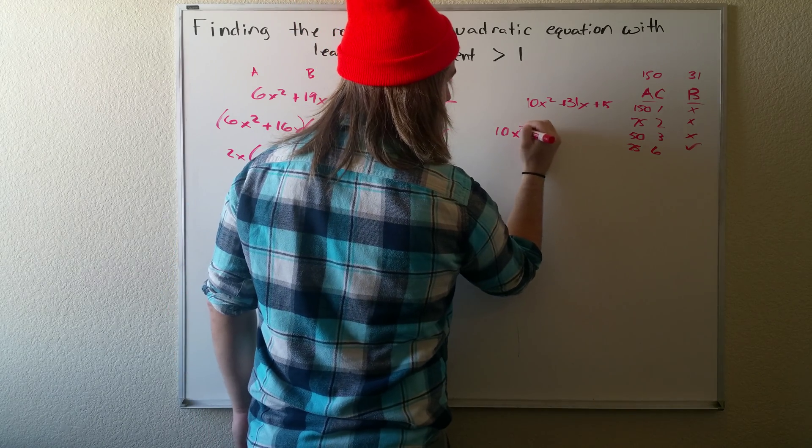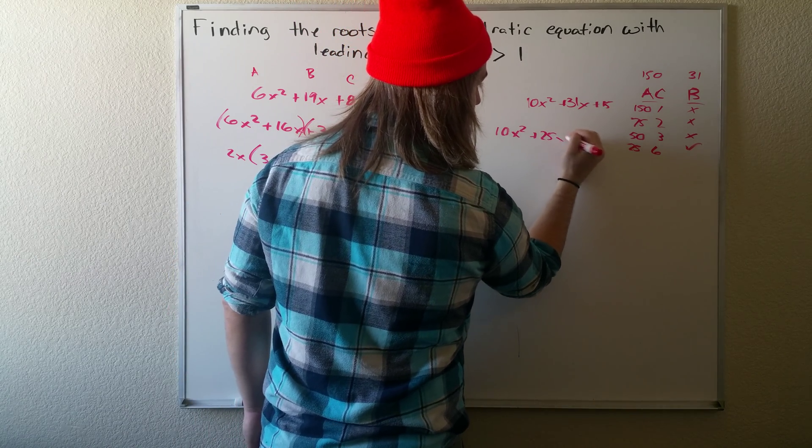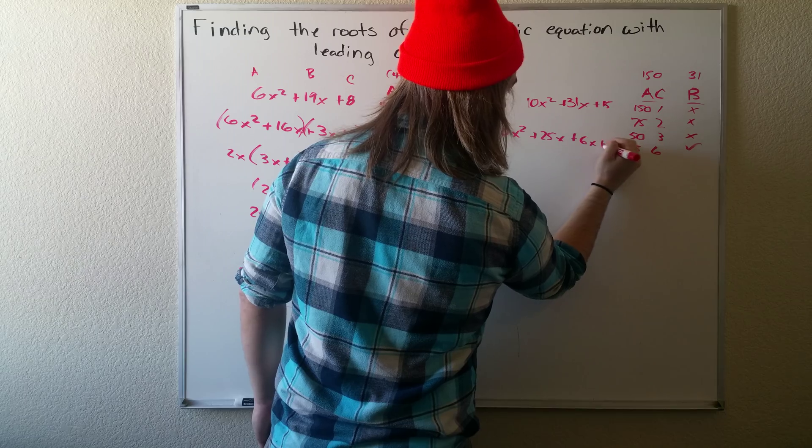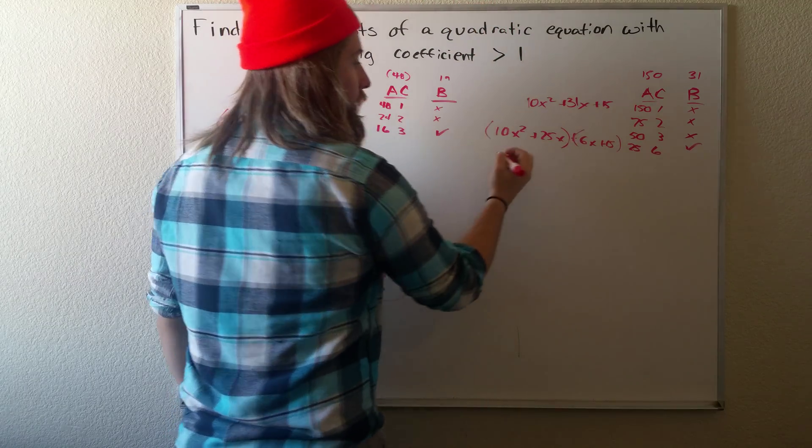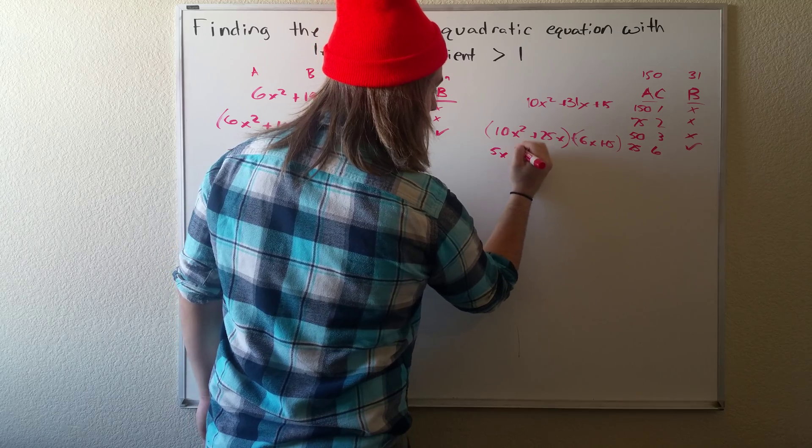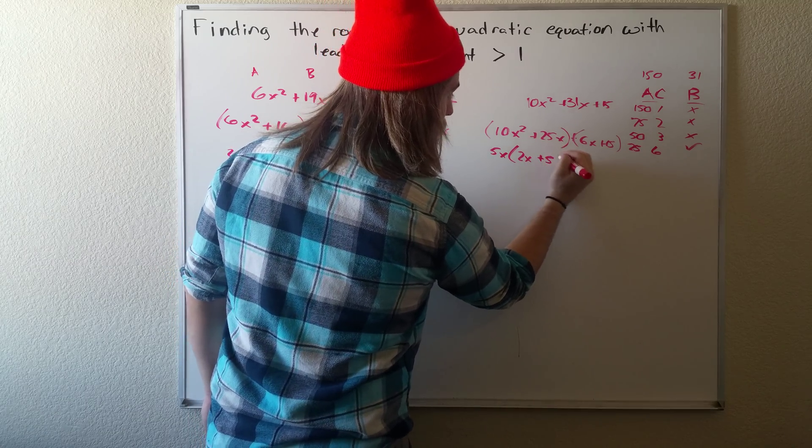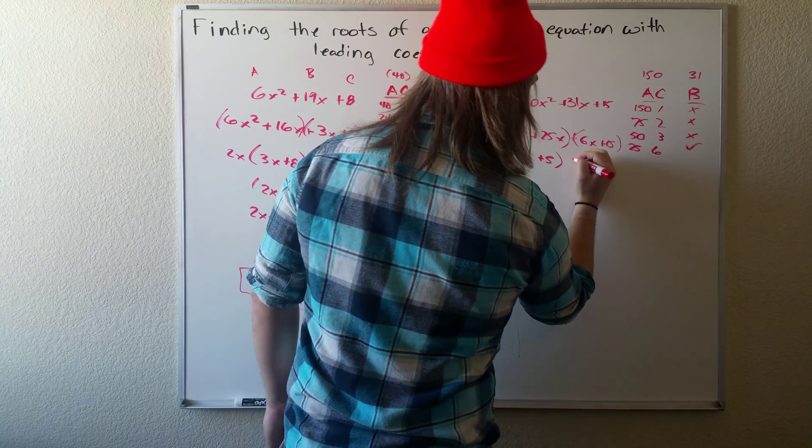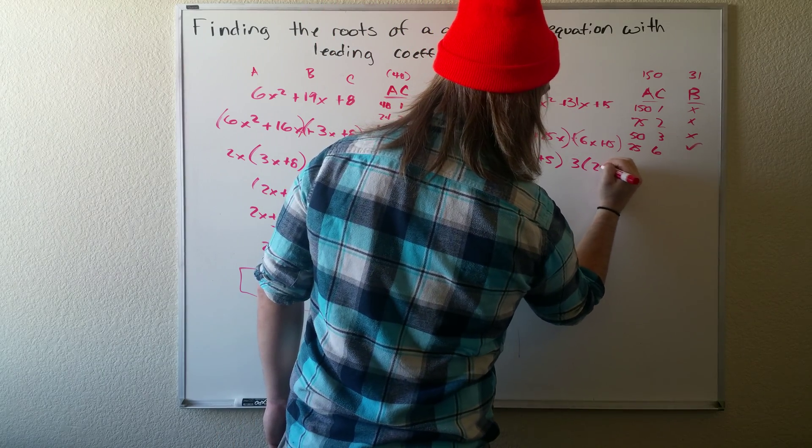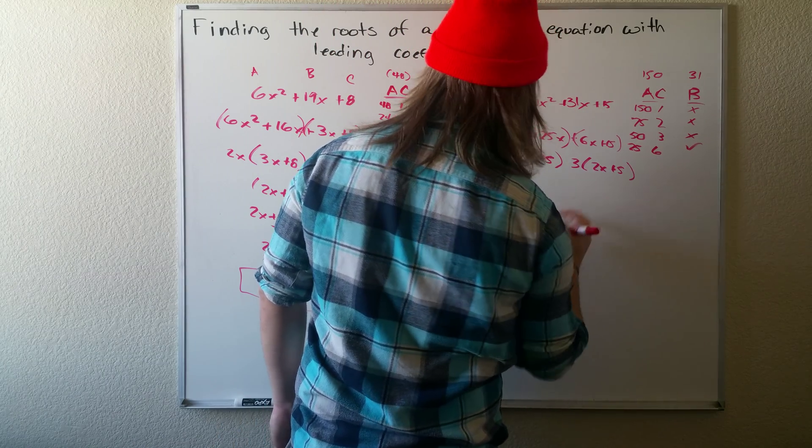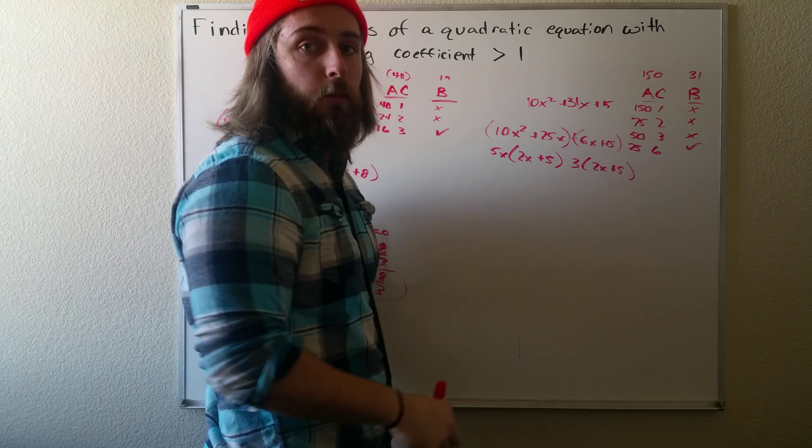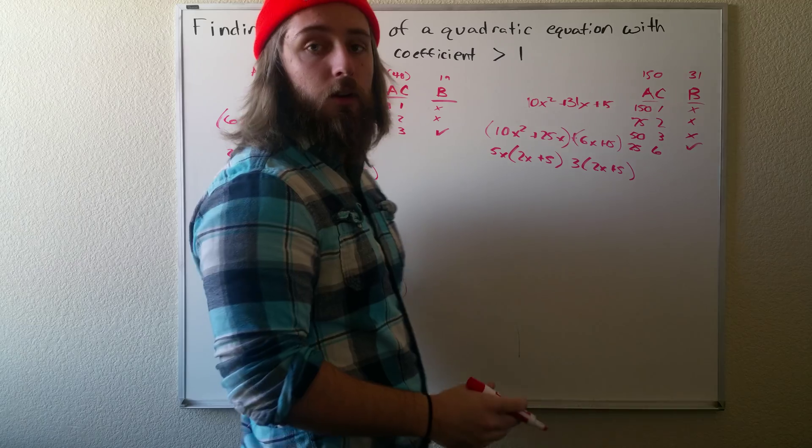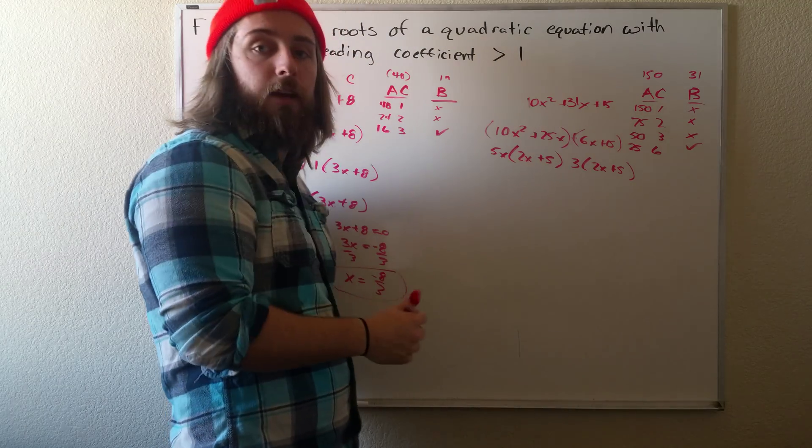Alright. So we have 10X squared plus 25X plus 6X plus 15. We're going to break it up into groups. So we can pull out a 5X. We get left over with 2X plus 5. We can pull out a 3. We get left over with 2X plus 5. Just a note: you should always get two binomials that are the same. If you don't, you did it wrong or you didn't pull out the greatest common factor.